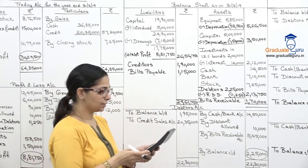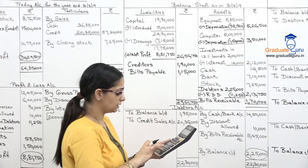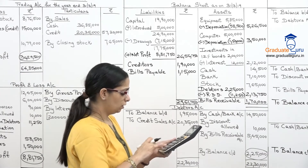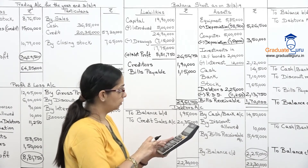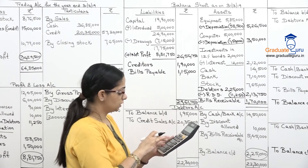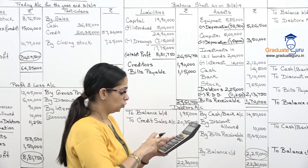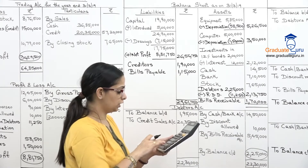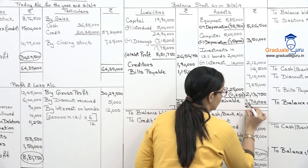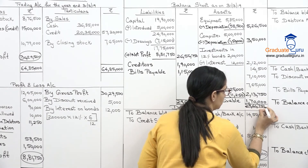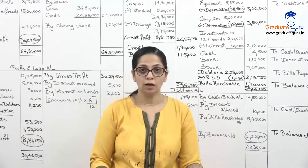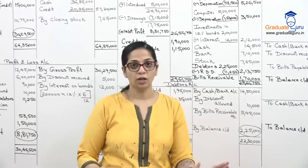Let's verify the balance sheet totals. Liability side: capital twenty six lakh fifty six thousand seven fifty, creditors one lakh ninety thousand, bills payable one lakh fifteen thousand — total twenty nine lakh sixty one thousand seven fifty. Asset side: equipment five lakh twenty six thousand five hundred, computer three lakh fifty thousand, investments two lakh twelve thousand, cash fourteen thousand five hundred, bank seven lakh ten thousand, stock seven lakh sixty five thousand, debtors net two lakh thirteen thousand seven fifty, bills receivable one lakh seventy thousand. Both sides tally at twenty nine lakh sixty one thousand seven fifty — balance sheet is correct.